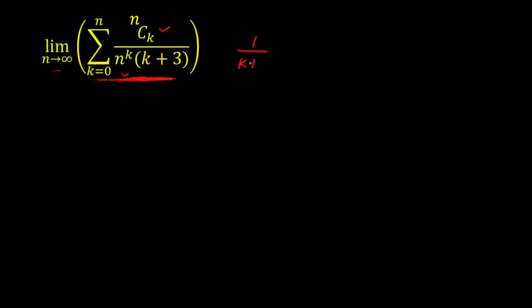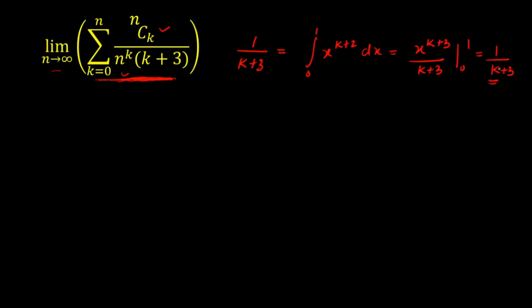The catch of the problem is here: I'll write 1/(k+3) as the integral from 0 to 1 of x raised to power k+2 dx. Let's verify: integrating gives x^(k+3)/(k+3) evaluated from 0 to 1, which gives 1/(k+3) minus 0. So yes, we can write 1/(k+3) as the integration from 0 to 1 of x^(k+2) dx.